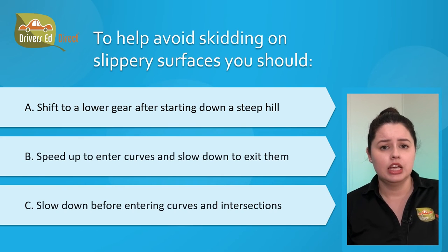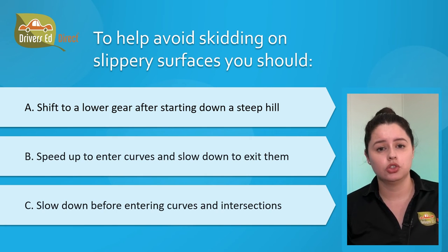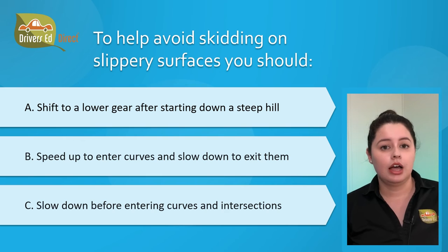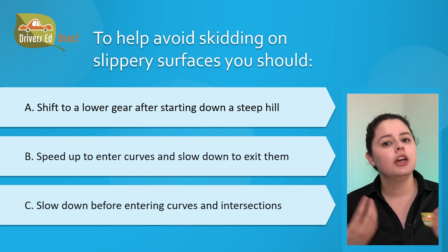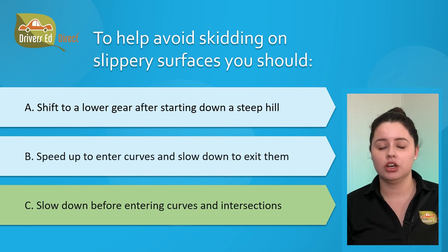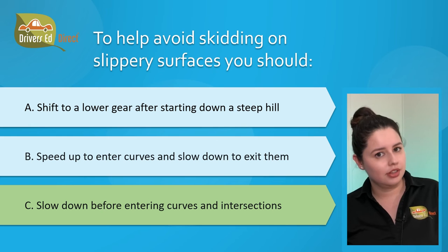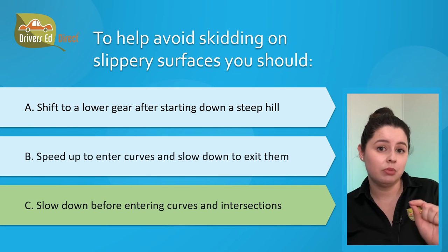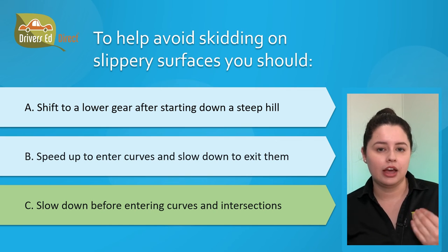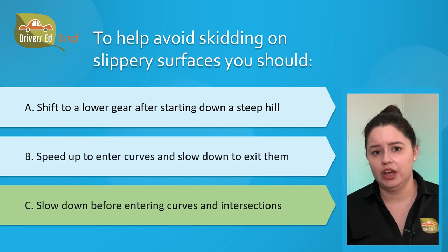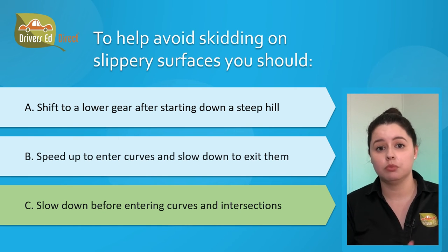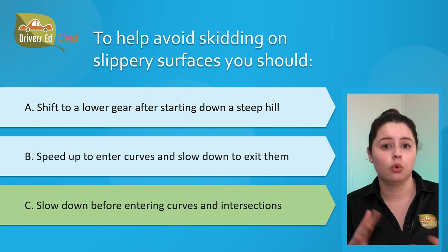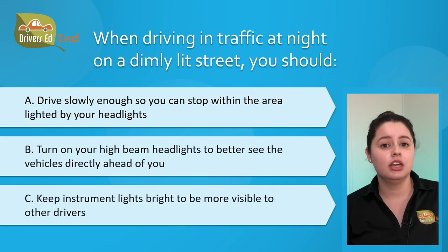Question number eighteen: to help avoid skidding on slippery surfaces, you should: A) shift to a lower gear after starting down a steep hill, B) speed up to enter curves and slow down to exit them, or C) slow down before entering curves and intersections. The correct answer is C, slow down before entering curves and intersections. To prevent skidding, drive more slowly and stay farther behind the vehicle ahead. Avoid fast turns and quick stops, shift to a lower gear before going down a steep hill, and avoid slippery areas like wet leaves, oil, or deep puddles.